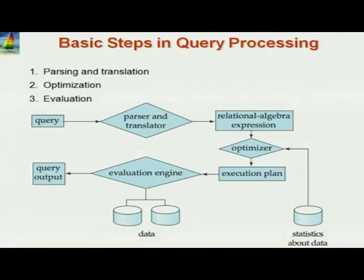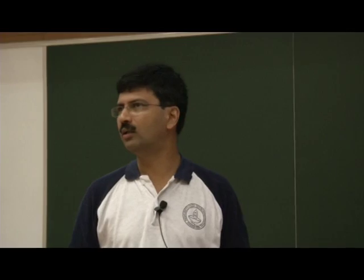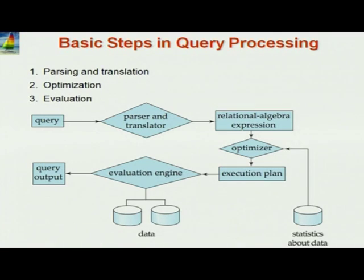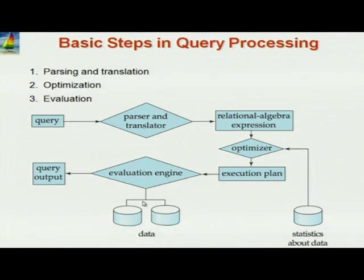That's the job of the optimizer. In the main workshop I will talk a bit about optimization. In today's lecture, we don't have time for this, so I'm going to skip optimization totally. But once you've done optimization, you have an execution plan and then you actually evaluate it. Chapter 12 talks about this part — what are execution plans and how the operations are actually evaluated. Chapter 13 talks about the optimizer itself, which I'm skipping here.